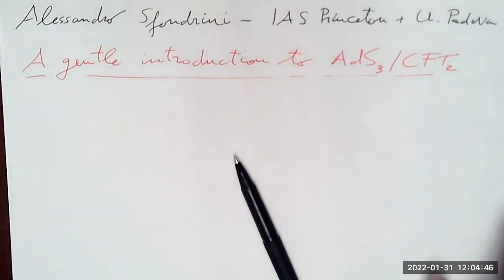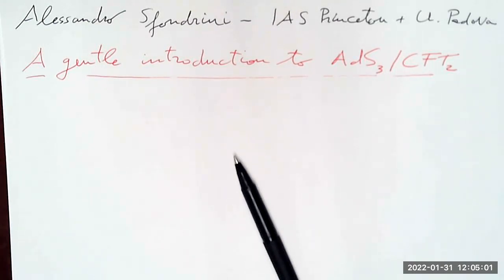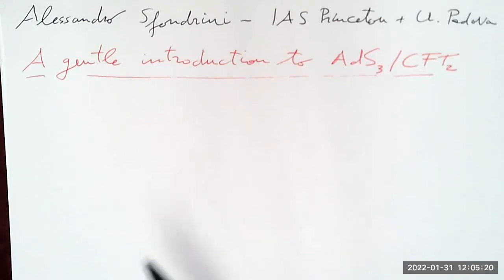Thank you very much, and thank you for the kind invitation. I would have very much liked to have the opportunity to visit, but the times are what they are. So it's very nice that at least I can tell you something remotely. To make things as close as possible to an actual talk, I will try to write on this piece of paper. You should really be asking questions — I have a list of things I want to tell you about, but I'm perfectly happy to slow down or go into more detail if you're interested, and especially if something is unclear, just ask.